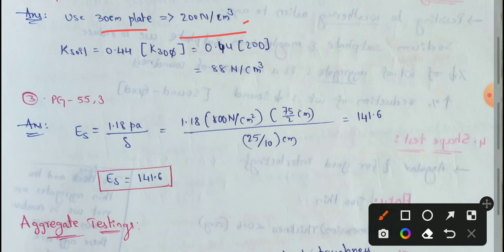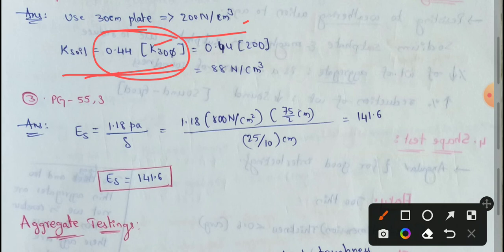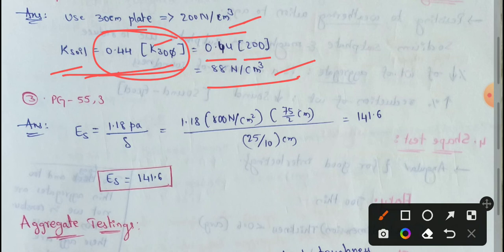Here, K_soil equals 0.44 into K30 diameter. I will apply this formula. The value is 200 N per cm². So, 0.44 into 200 equals 88 N per cm². This is the simple process. Therefore, the modulus of subgrade soil equals 88 N per cm².